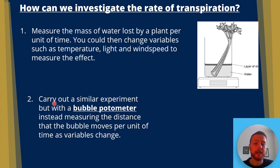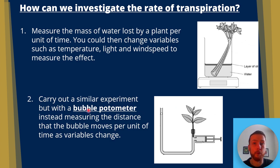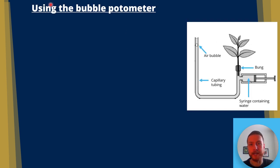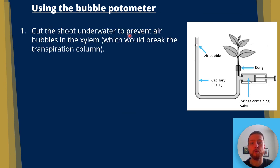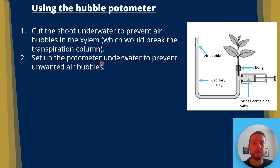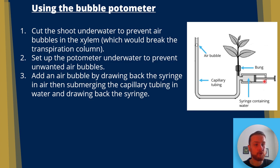We can also measure the rate of transpiration using a bubble potometer. We cut a shoot underwater — more on that in a moment — and have a bubble within some delivery tubing, tracking the distance the bubble moves over time. You cut the shoot underwater to prevent air bubbles in the xylem, because air bubbles would break the transpiration column. The potometer is also set up underwater to prevent unwanted air bubbles in the capillary tubing. We add an air bubble by drawing back the syringe, which causes a pressure gradient and draws a little air in.